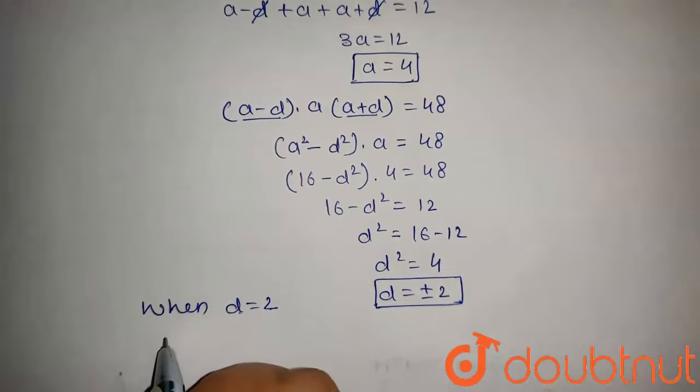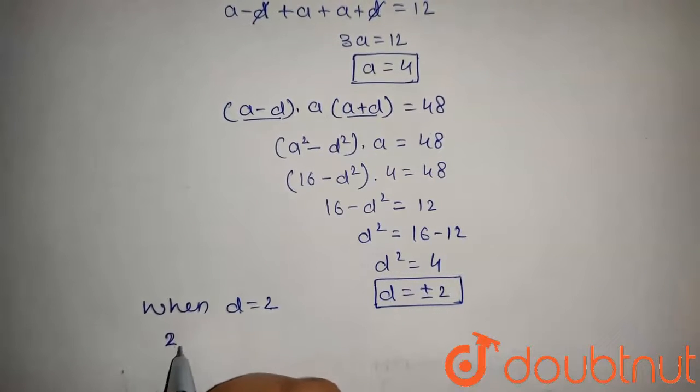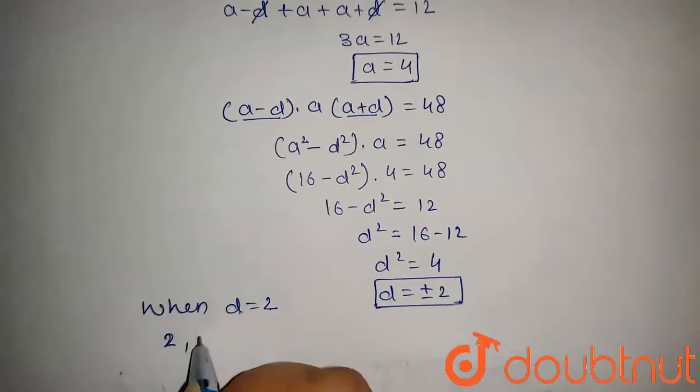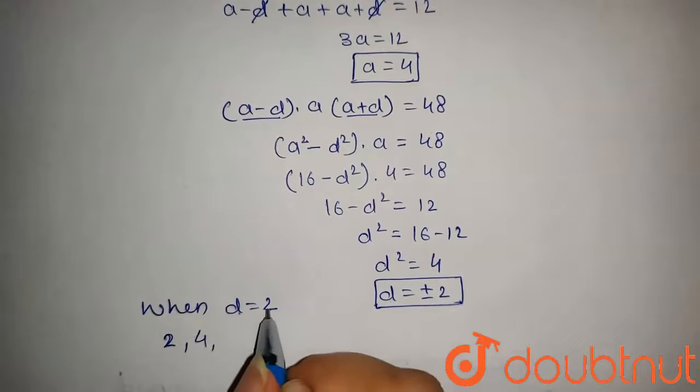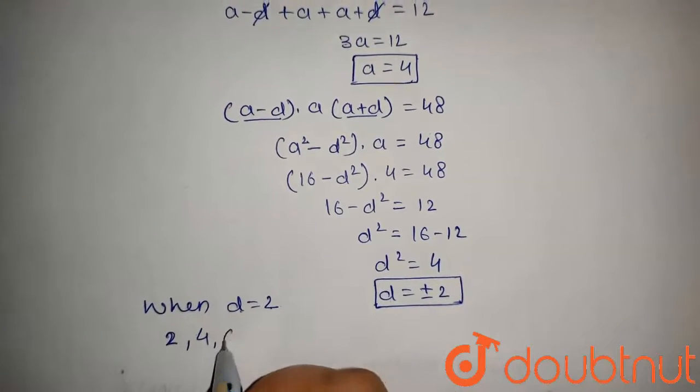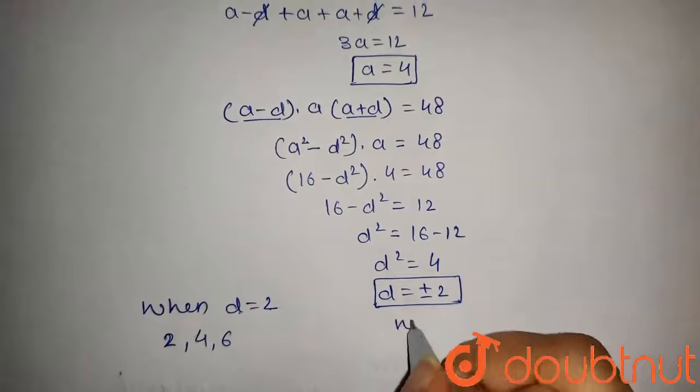The middle term will be 4, and a plus d, that is 4 plus 2, equals 6.